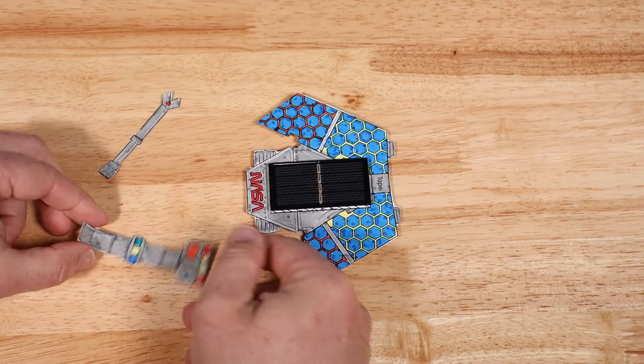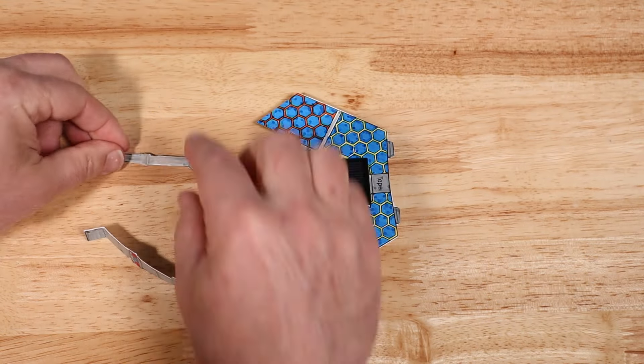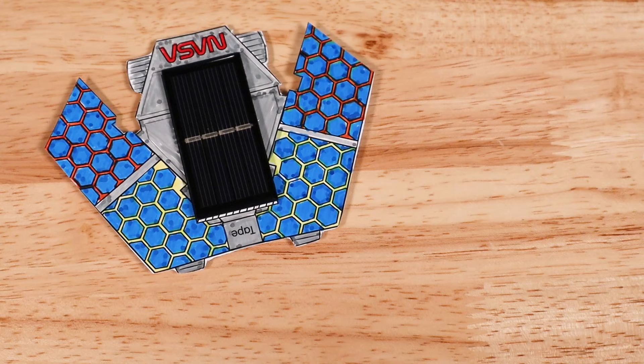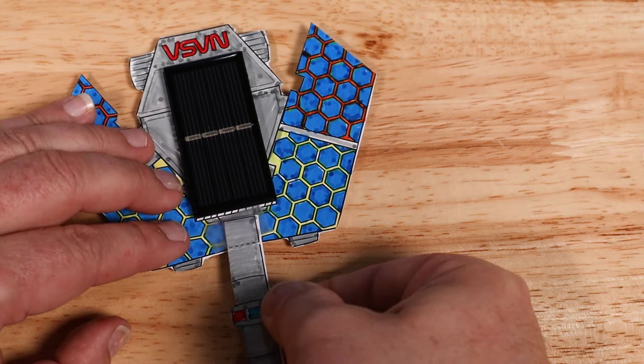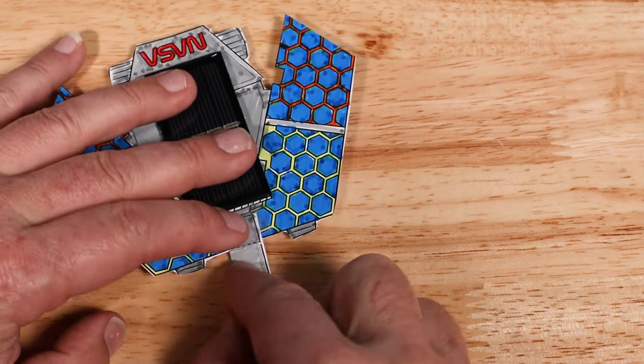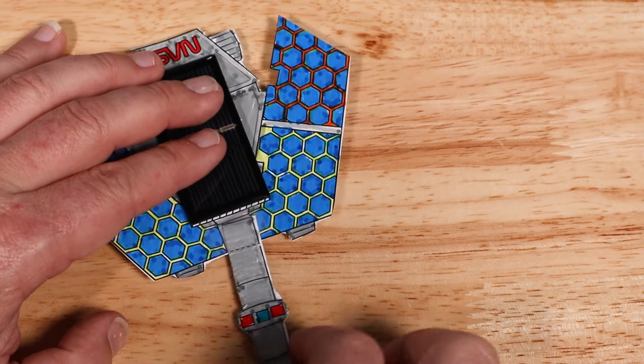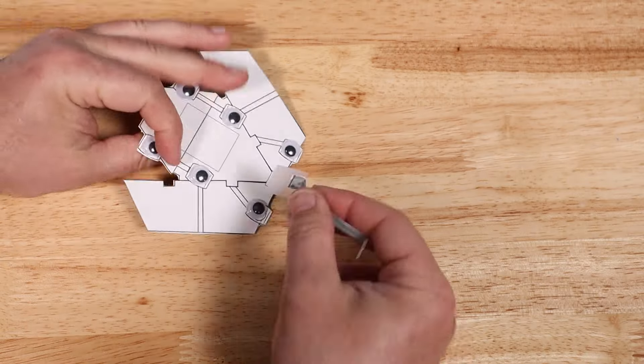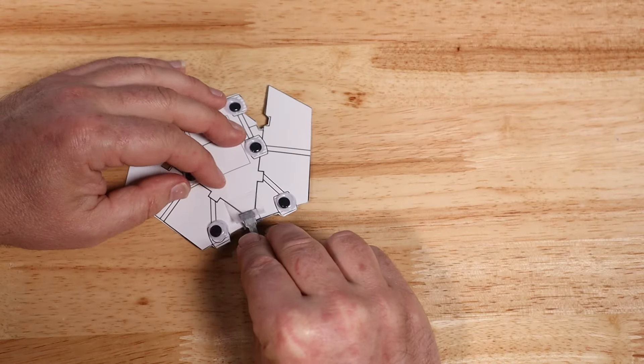Bend the gripper and sensor array cutouts on the dotted lines. Tape the sensor array on the top of the cutout and tape the gripper array on the bottom.